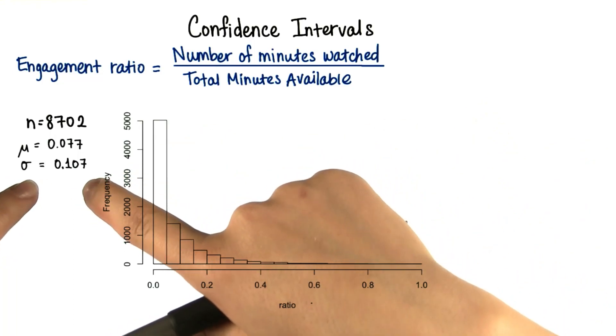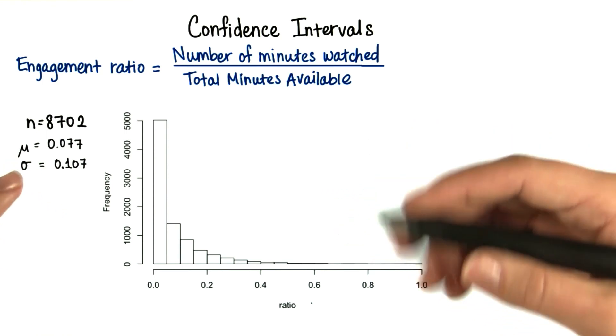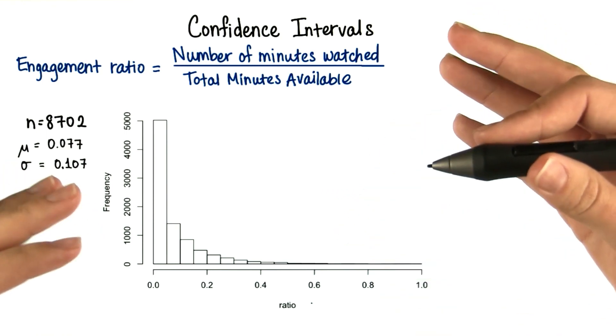So here are our population parameters. Let's say that I want to bring up this ratio. So I want more people to watch more of the lessons.